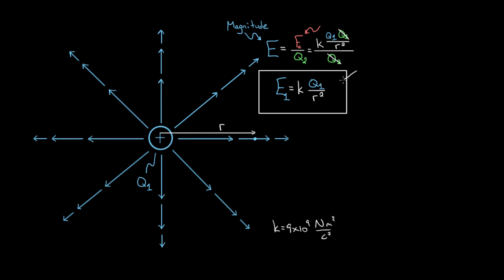Technically, this formula is only true if this is a point charge—in other words, if it's really, really small compared to the other dimensions in the problem. Or if the charge is spherically symmetric, then it doesn't matter. If you're outside a spherically symmetrical charge distribution where the charge is evenly distributed throughout, this formula also works. The magnitude of the electric field at a point in space equals K times the charge creating the field, divided by R squared.